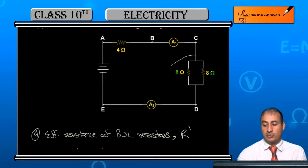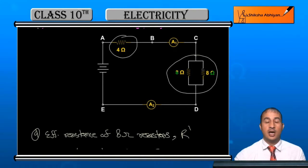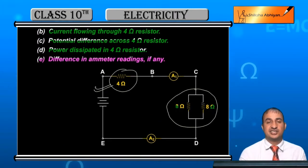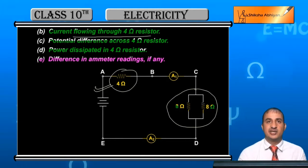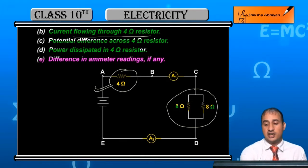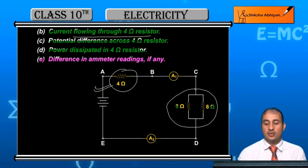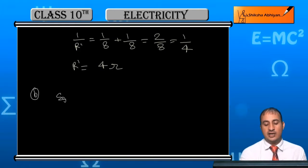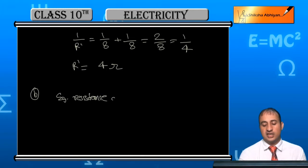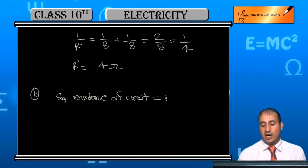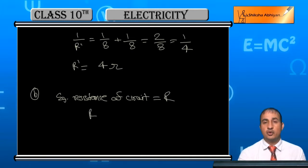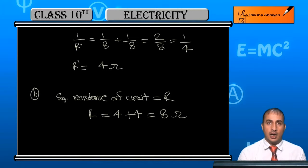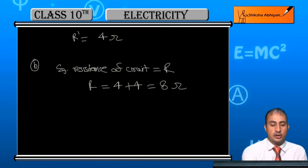Now you can see that this combination gives a complete 4 ohm. This 4 ohm is in series with the other 4 ohm resistor. To find the current across the 4-ohm resistor, we need to find the equivalent resistance of the entire circuit. For Part B, the equivalent resistance R of the circuit is 4 + 4 = 8 ohm.